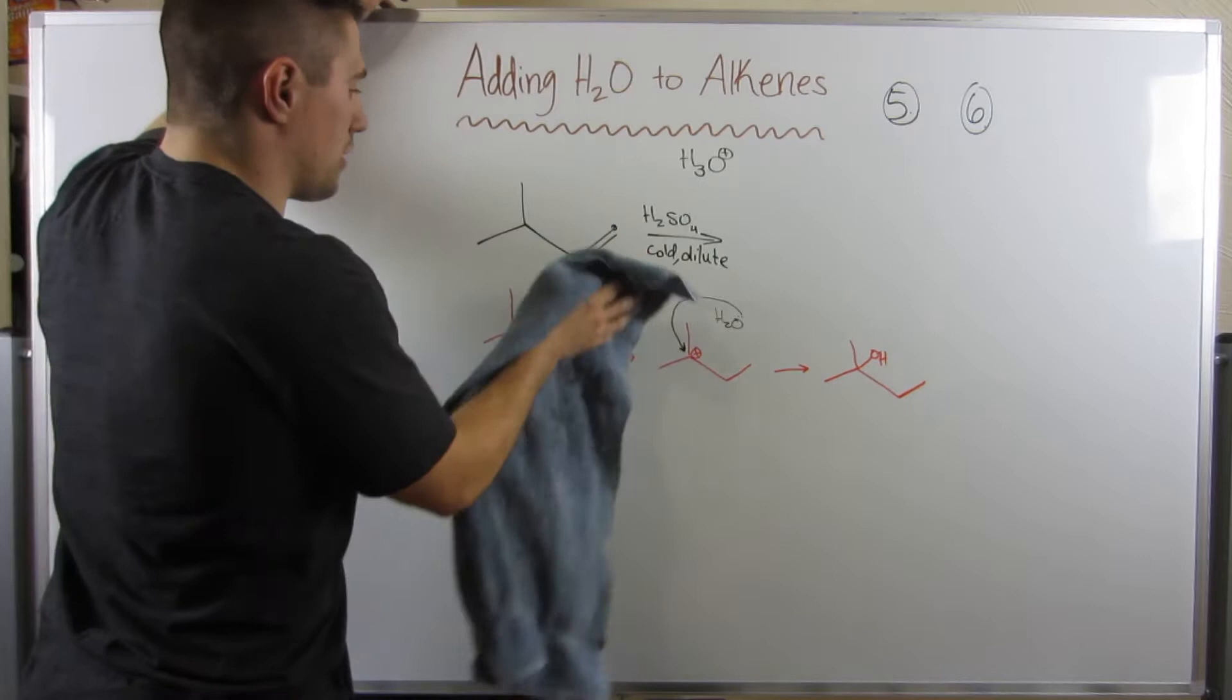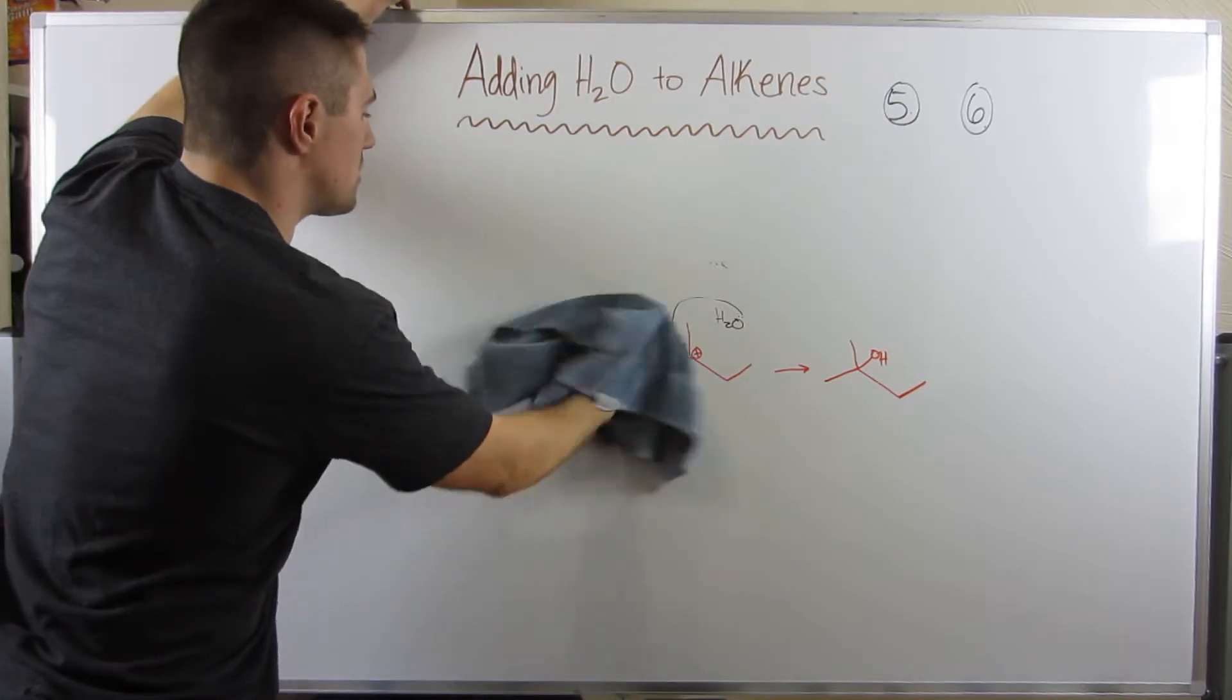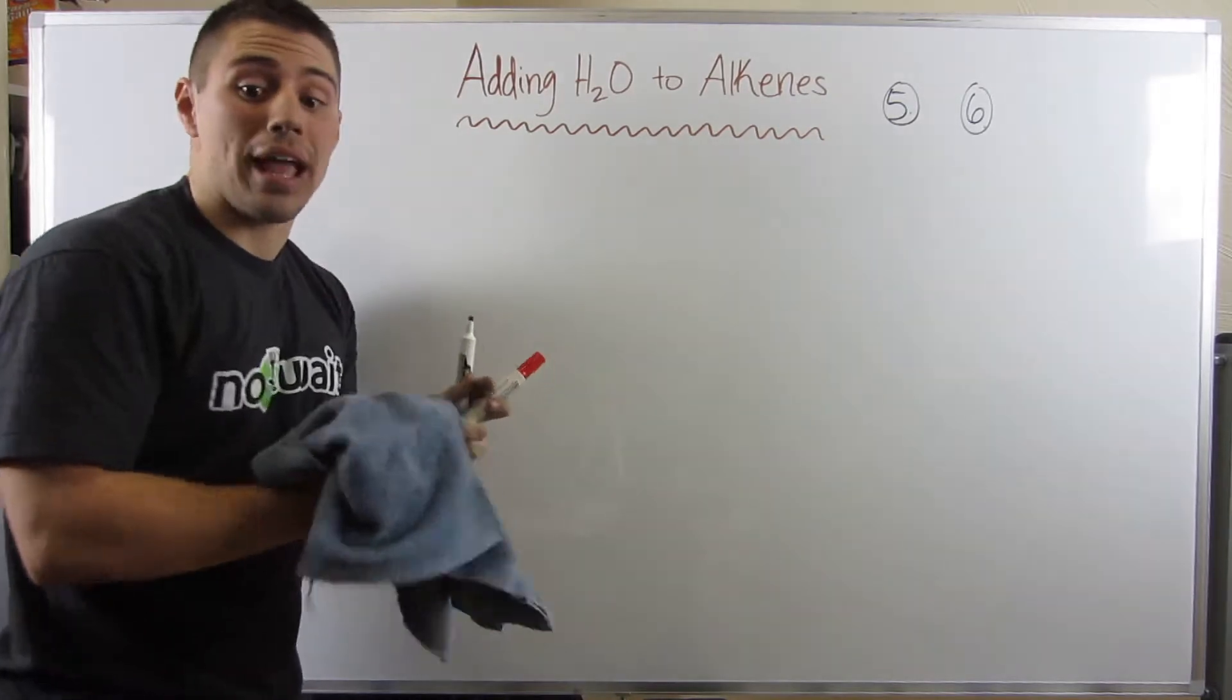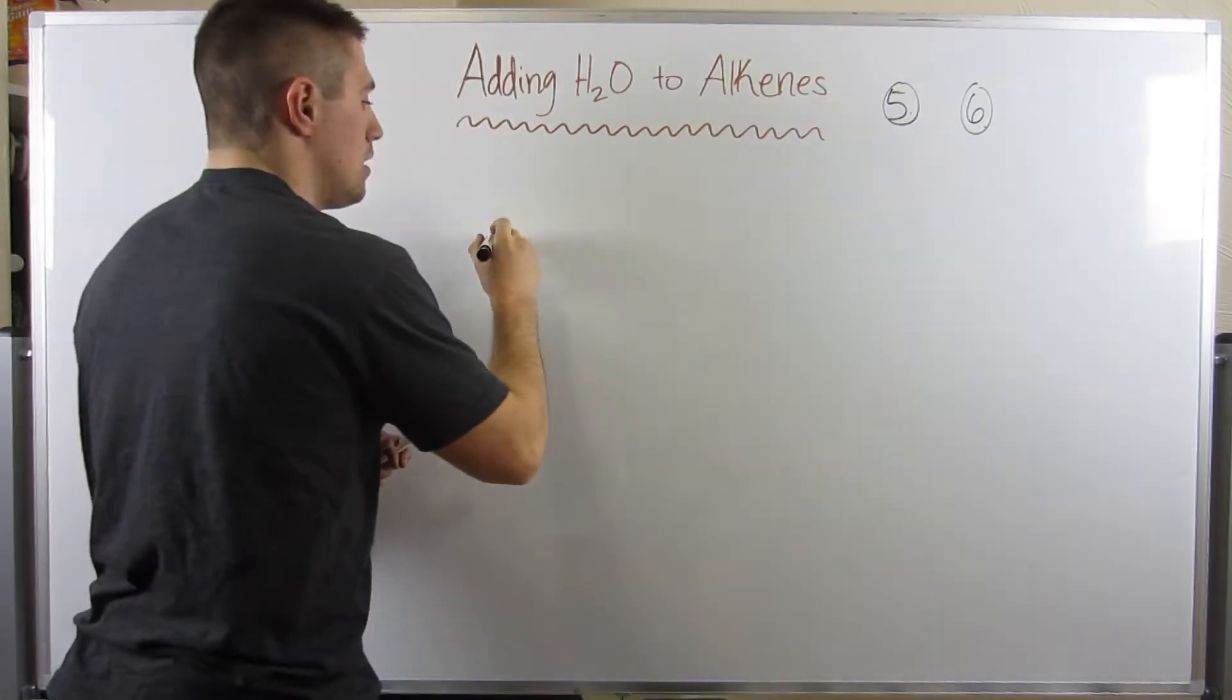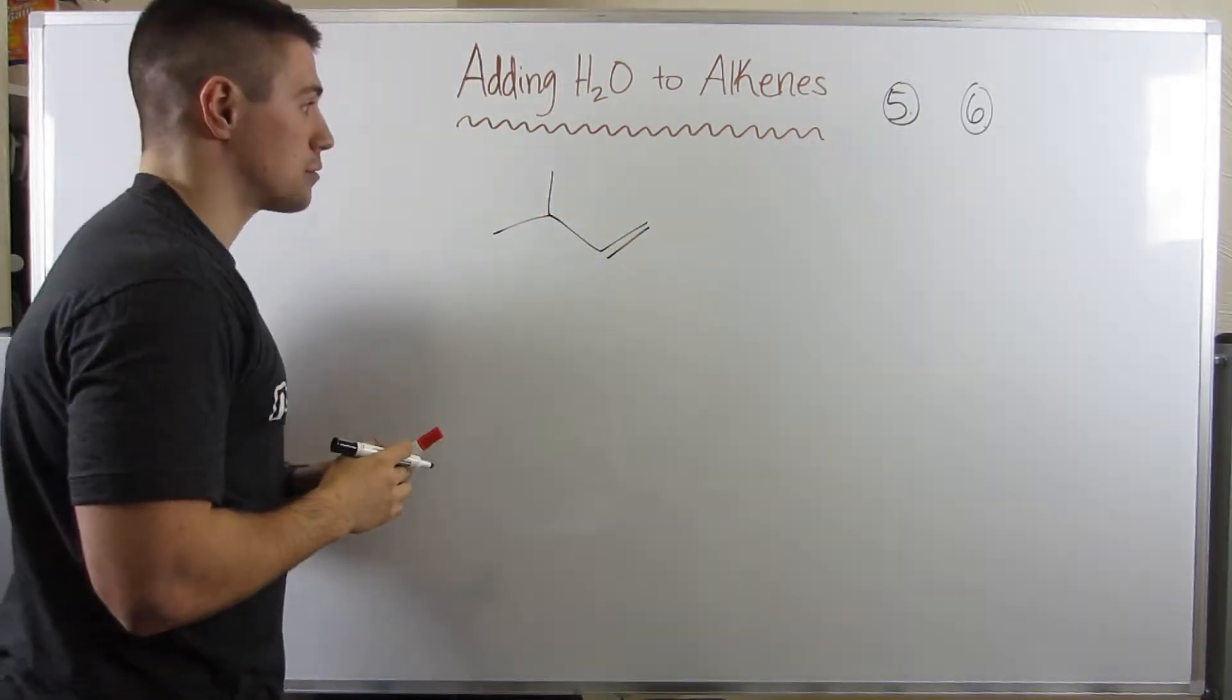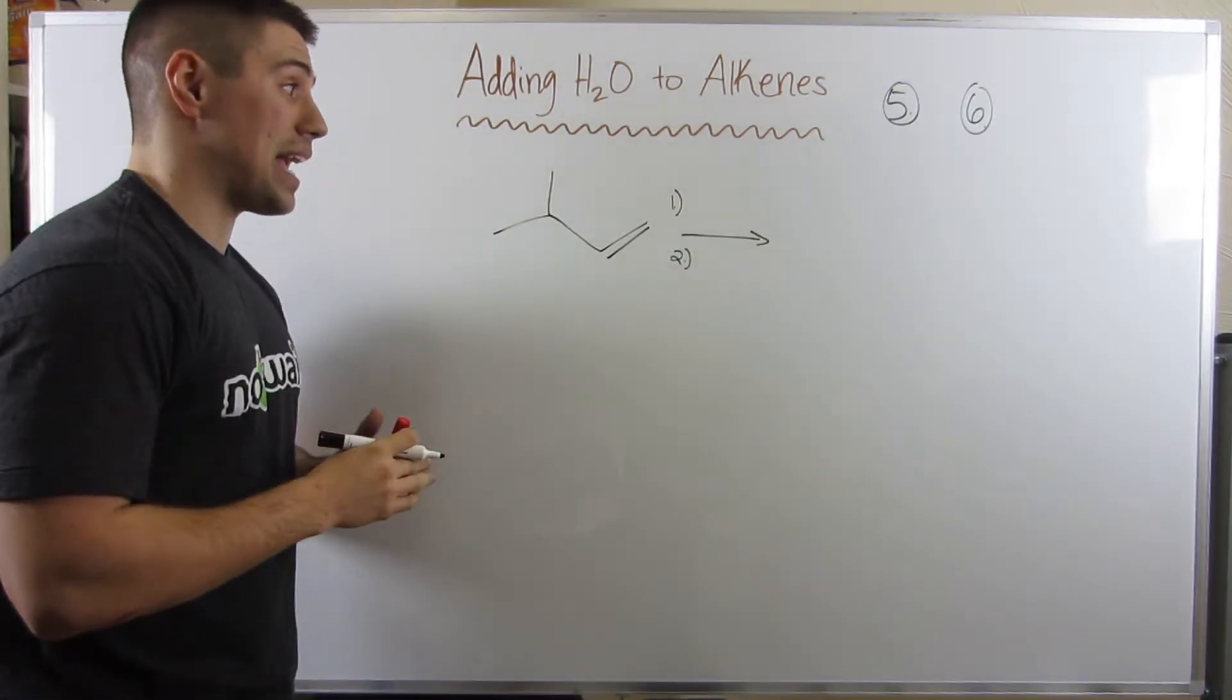So let me get my very ratchet rag to erase this and make us some space. The point of this video is to basically give us more options of how to add water to alkenes without any shifts. Okay? So let's look at the first reaction we're going to do. This is reaction number five. Given that same structure, double bond on the end, right?